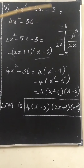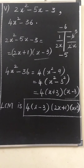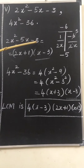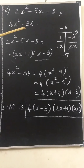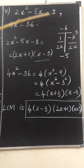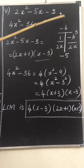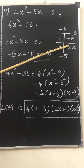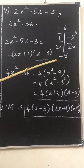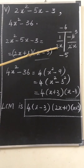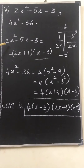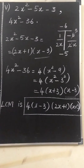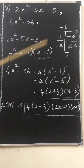Next sum: find the LCM of 2x² − 5x − 3 and 4x² − 36. These two are also quadratic polynomials, so we factorize them first. For 2x² − 5x − 3, use the key method: the product is 2 × (−3) = −6 and the sum is −5. The numbers are 1 and −6. Since the leading coefficient is 2, we divide by 2x, and 6 and 2 cancel to give 3. So 2x² − 5x − 3 factorizes as (2x + 1)(x − 3).